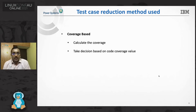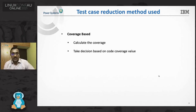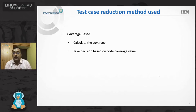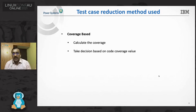Before jumping into the actual project, I want to cover some of the methods we used here. There are many different methods which reduce test cases, but out of which we picked up the coverage-based method. Using this method, the reduction rate of test cases can reach up to 99% — the number of test cases are reduced from thousands to a couple of tens, with no reduction in fault-finding capacity. The procedure has two simple steps: calculate the code coverage, and take the decision based on the code coverage value.